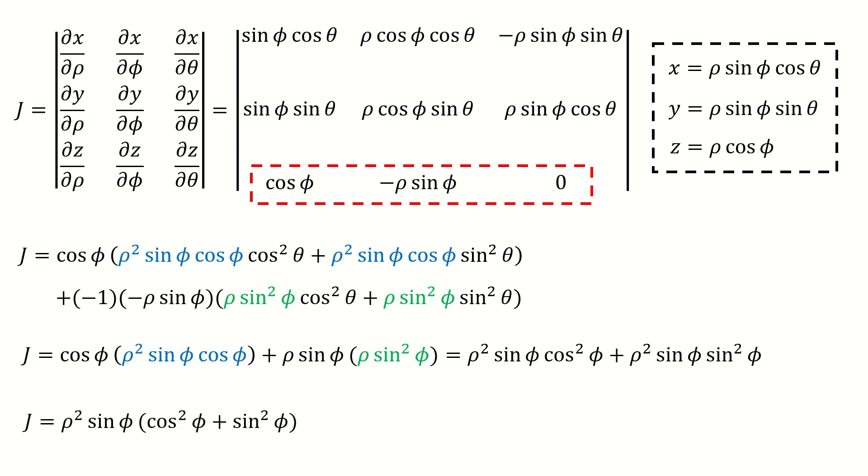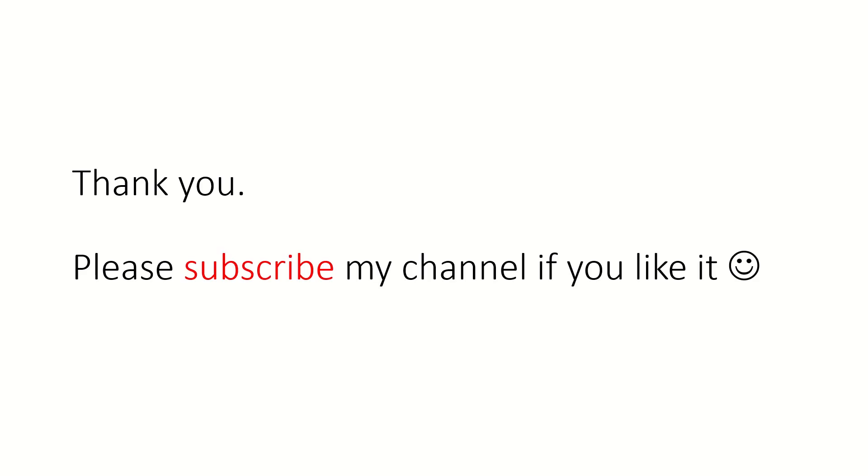We factor out rho squared times sine phi. Inside the parentheses, it equals to 1. So we got the result for the Jacobian. That's all for today. Thank you for watching. Please subscribe my channel if you like it.